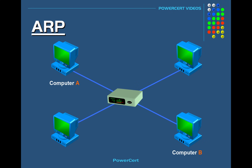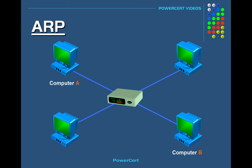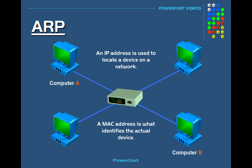As an example, let's say that computer A wants to communicate with computer B. Computer A already knows the IP address for computer B, but in order to communicate with it, it still needs its MAC address. An IP address is used to locate a device on a network, and the MAC address is what identifies the actual device.